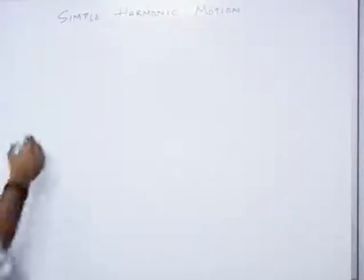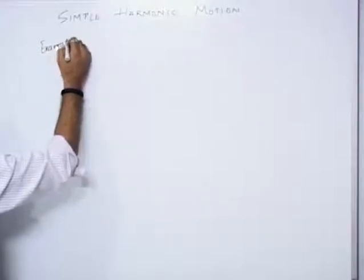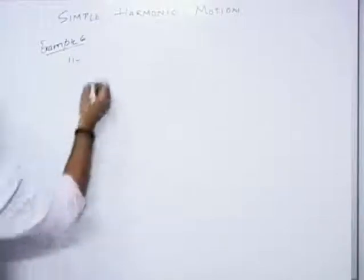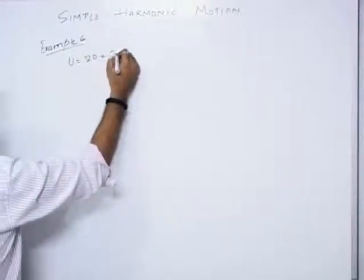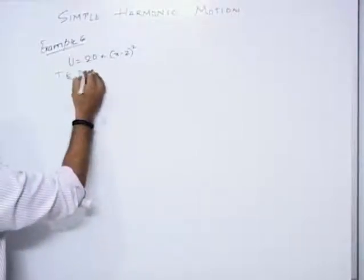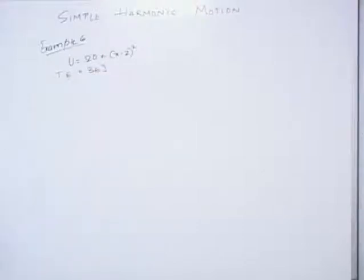Now let us see a very interesting example — Example number 6. The potential energy is 20 plus (x minus 2) whole square. The total energy is 36 joules. This is a periodic oscillation, and the total mechanical energy is 36 joules. It is asked: state whether the motion of the particle is SHM or not.